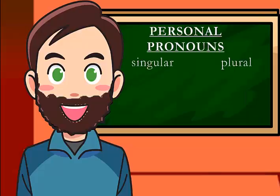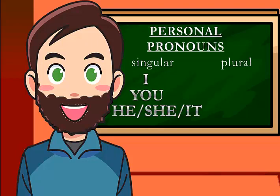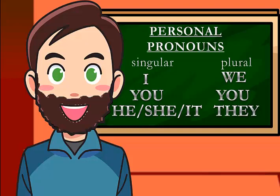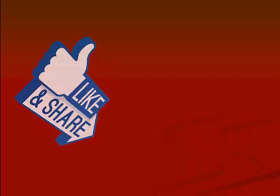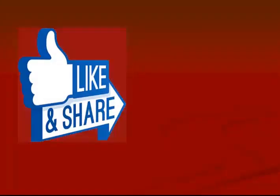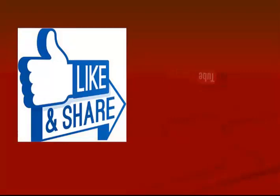Okay, remember — personal pronouns: in singular, we need I for the first person, you for the second person, he, she, or it for the third person. And for the plural forms, we have got we in the first person plural, you for the second person, and finally they for the third person plural. Okay, that's all for today — and remember, if you liked this video, share it, and also you can subscribe to our YouTube channel.